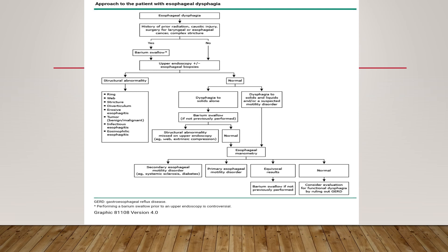However, if there is a prior history of radiation, caustic injury, or surgery, first perform a barium swallow to assess the esophageal lumen before proceeding with endoscopy. On endoscopy, structural abnormalities can include rings or webs, strictures, diverticulum, erosive esophagitis, tumor, infectious esophagitis, or eosinophilic esophagitis.